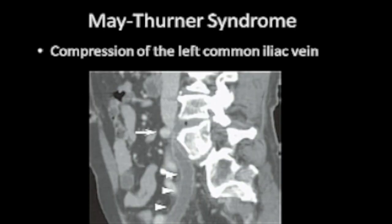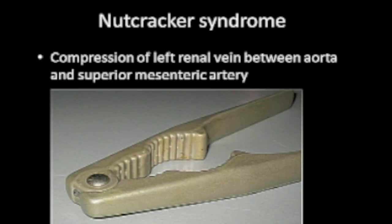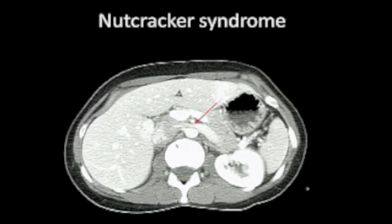May-Turner Syndrome is compression from the common iliac artery onto the common iliac vein. As shown here, the top arrow points at the common iliac artery compressing the vein and causing a filling defect throughout the entire common iliac vein — that is a thrombosis. Nutcracker Syndrome is compression of the left renal vein by the superior mesenteric artery, essentially the shape of a standard nutcracker. On the axial CT scan with contrast, you can see the vein passing between the aorta and the superior mesenteric artery, causing compression.